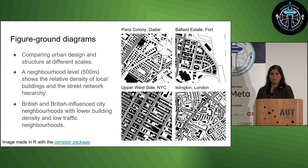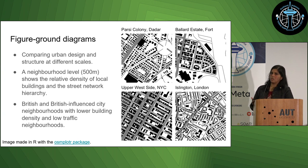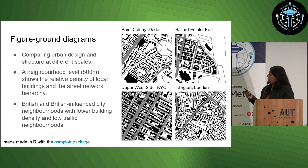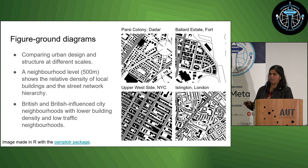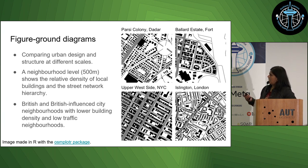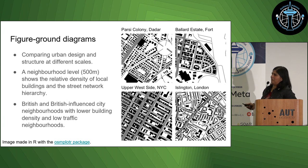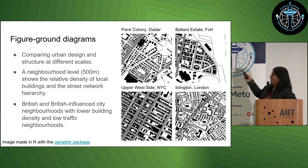I don't know how many people are familiar with figure-ground diagrams, but they're quite pervasive in architecture and urban design. They give you a good sense of the urban structure in terms of how big the building footprints are and how street networks are oriented around the plots. The buildings are filled in black and the streets are coloured by their relative importance in the street hierarchy in OSM — the wider they are, the larger the road or the more traffic you can expect.